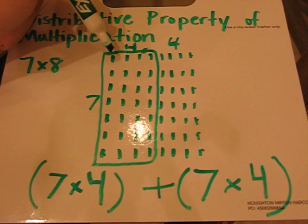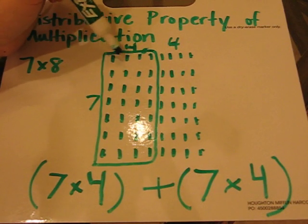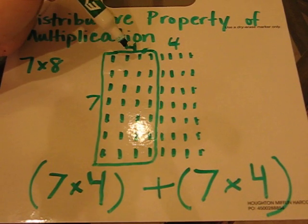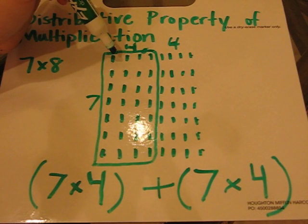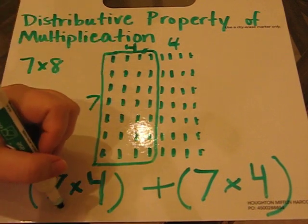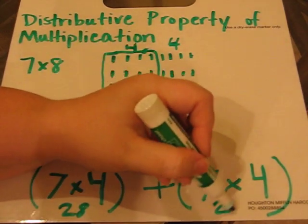So 7 times 4, I could count by 4's 7 times. I could count by 7 4 times. And I should get the answer of 28. So my answer would be 7 times 4 is 28. 7 times 4 is 28.